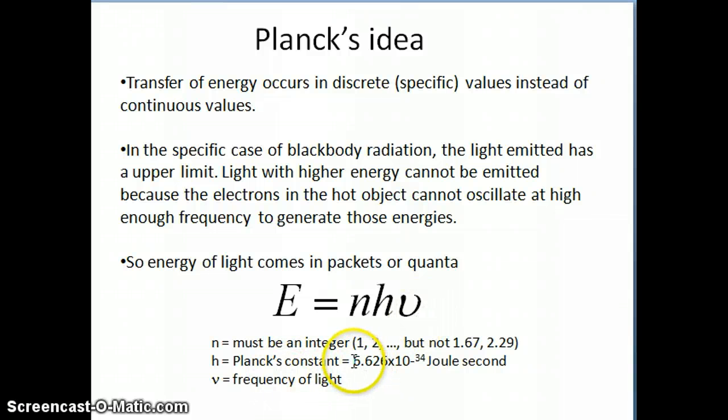h is Planck's constant. It's experimentally determined. Found this value to be 6.626 times 10 to the minus 34 joules second is the unit. It's kind of a funny unit. If you think about it, it's really sort of like a measure of energy for a given frequency value. So for a frequency value, you have a certain energy associated with it. It's not something that you might immediately have an understanding, intuitive understanding about, but basically it's the amount of energy that you have for a particular given frequency. Now, ν, this symbol right here is the frequency of the light itself that's being emitted.